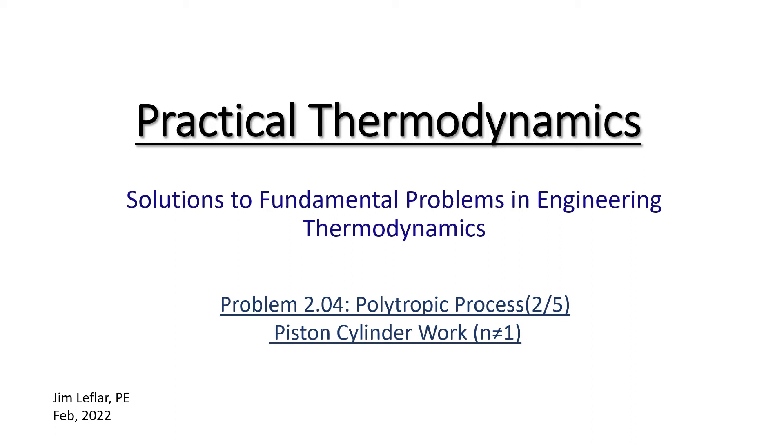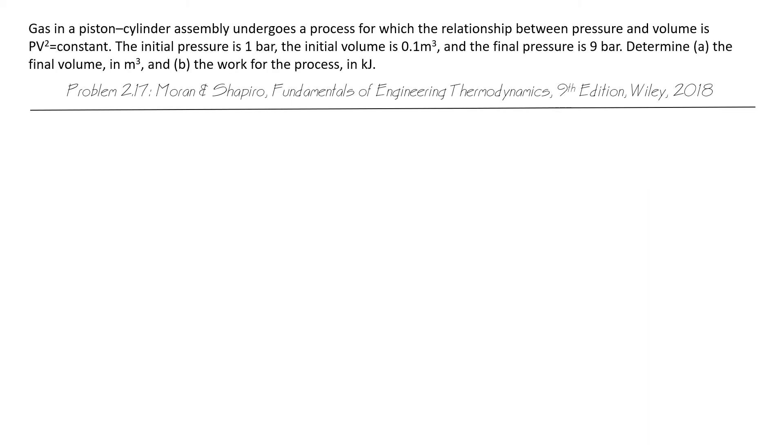Let's solve a thermodynamic problem involving the use of a polytropic process. Gas in a piston cylinder assembly undergoes a process for which the relationship between pressure and volume is PV squared equals constant.